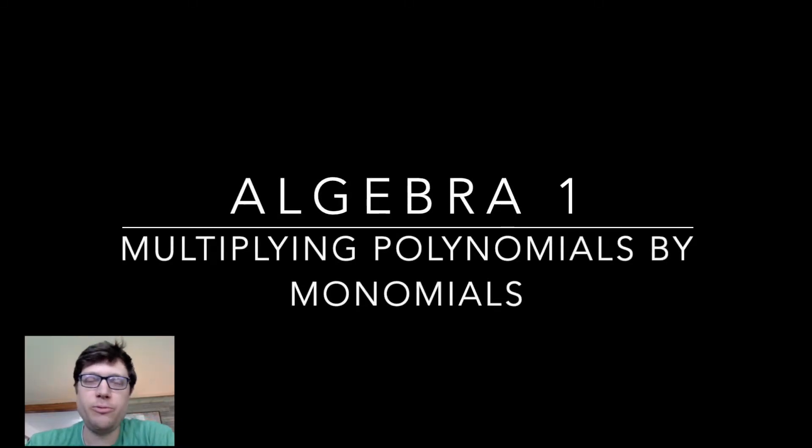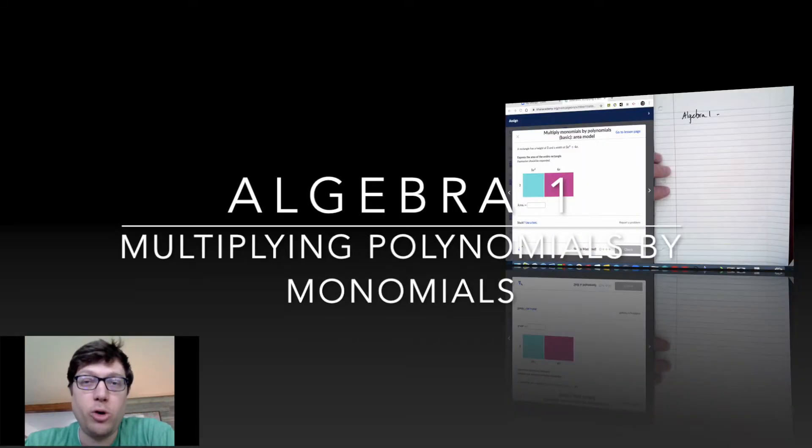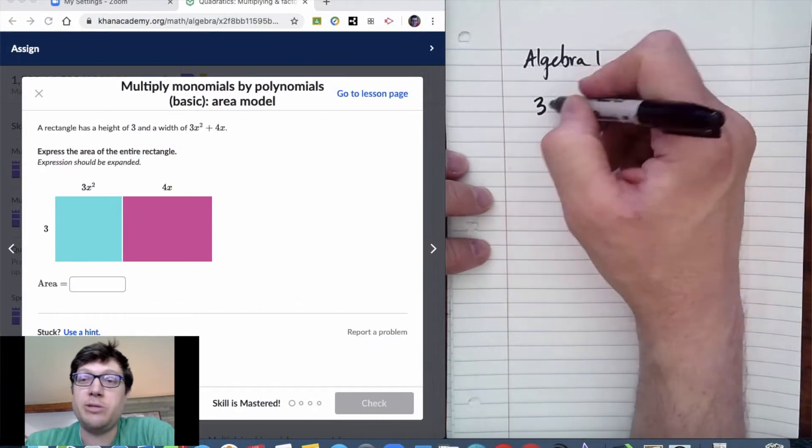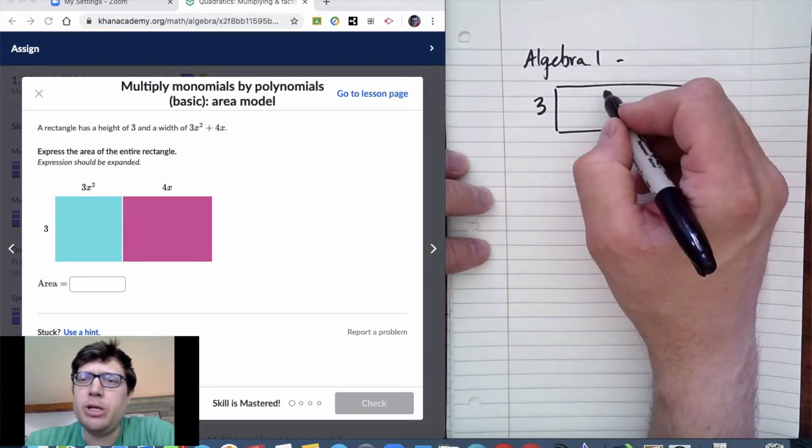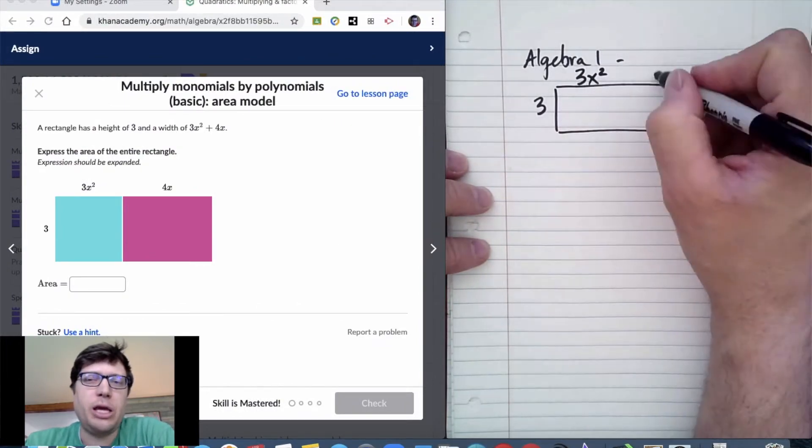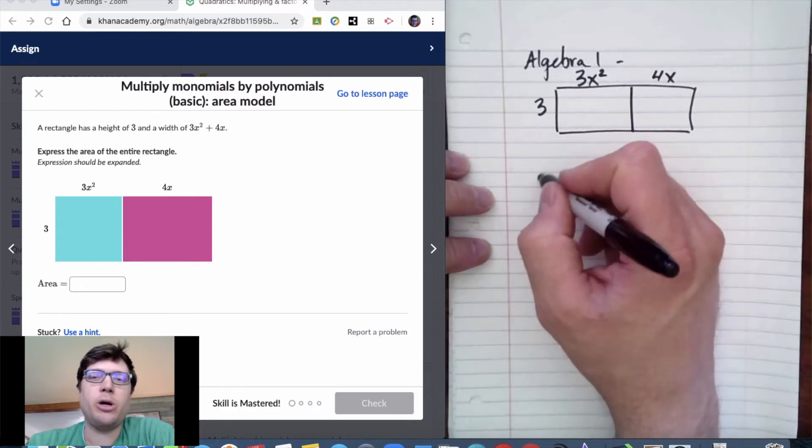Okay, so I'm going to do an Algebra 1 video for multiplying polynomials by monomials. This is related to the quadratics information. We started a little bit of this in class, but we're going to take an expression like 3x² + 4x, and we're going to multiply by 3.